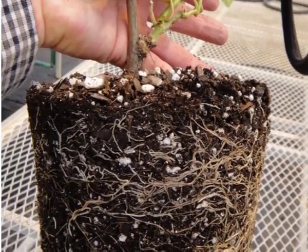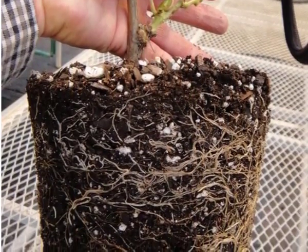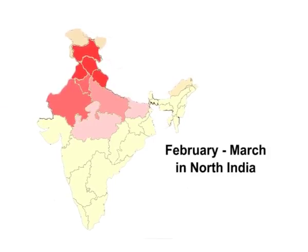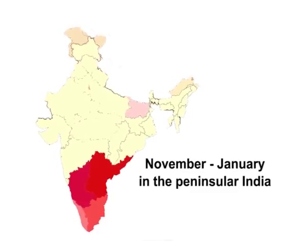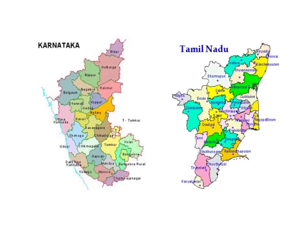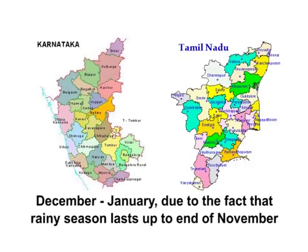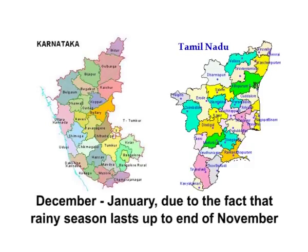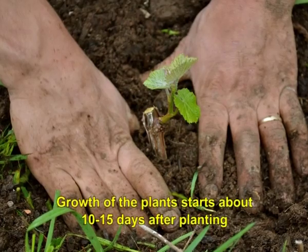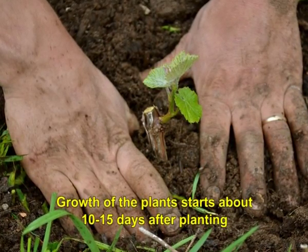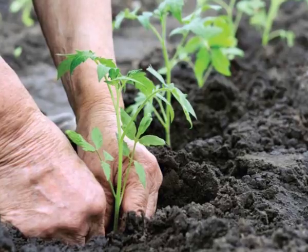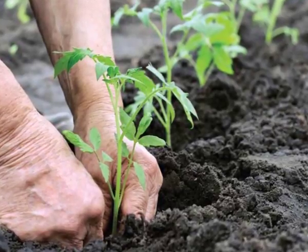In central Maharashtra and northern Karnataka, spacing for Thompson Seedless and its mutants is 1.8 × 2.4 m. Pits need to be opened about a month before planting. The best time for planting is February–March in North India and November–January in Peninsular India. In Karnataka and Tamil Nadu, planting is during December–January as rains last until end of November. Growth starts about 10 to 15 days after planting, and after one month, plants need staking and training.